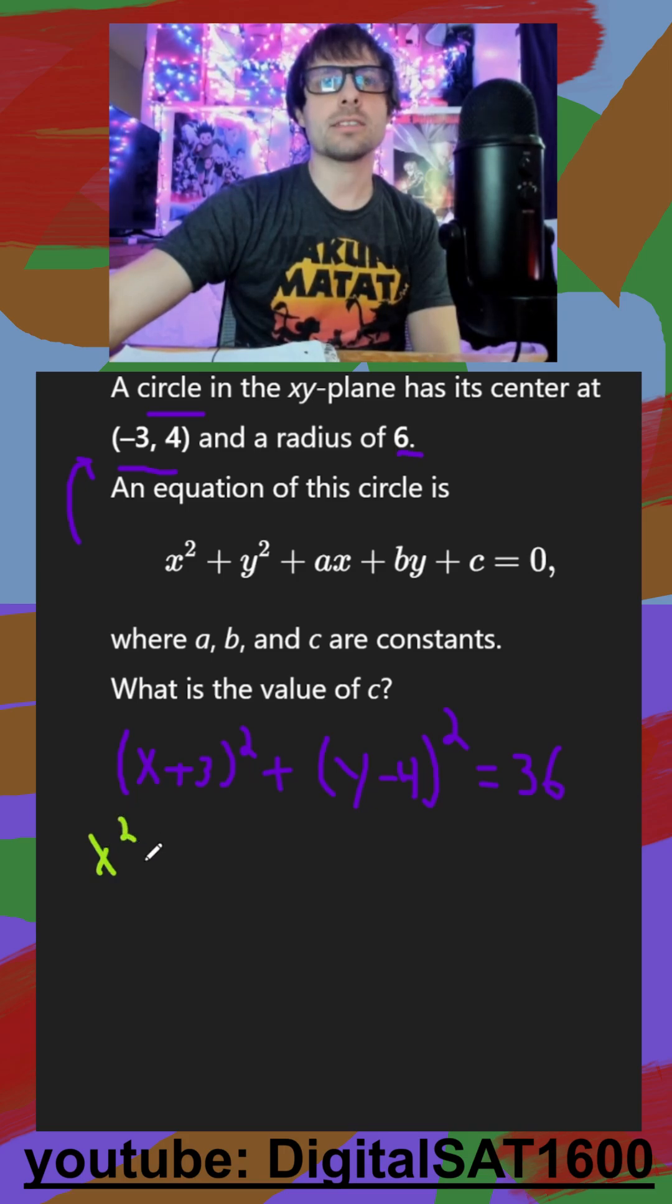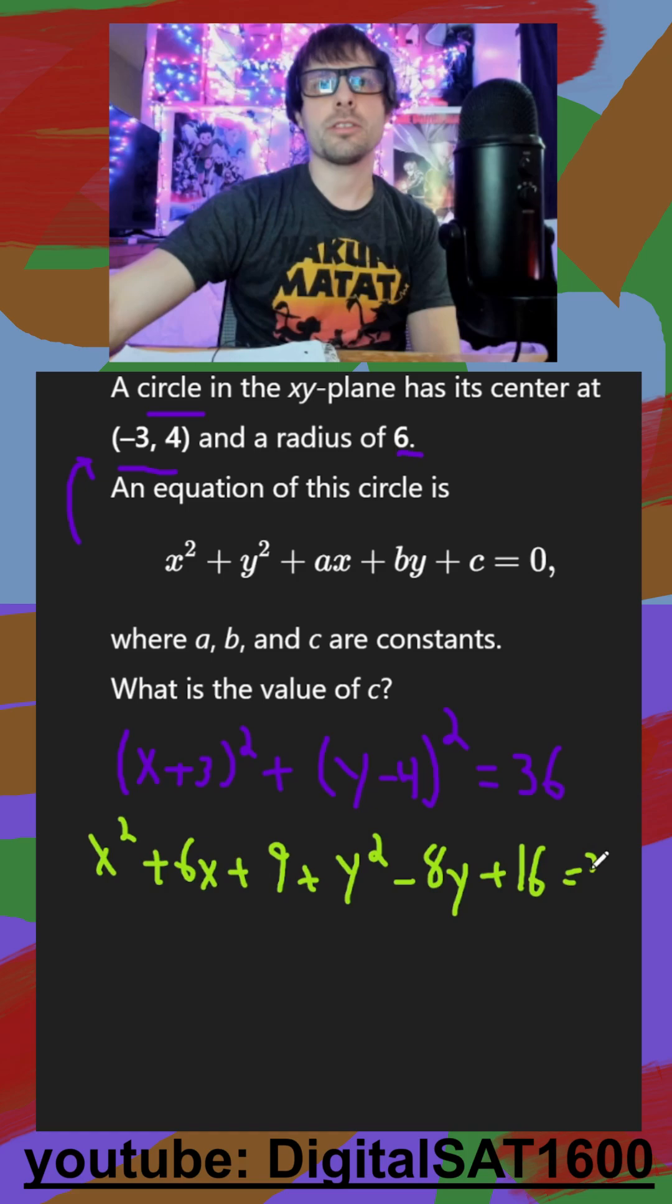So this is just going to get me x squared plus 6x plus 9 plus y squared minus 8y plus 16 is equal to 36.